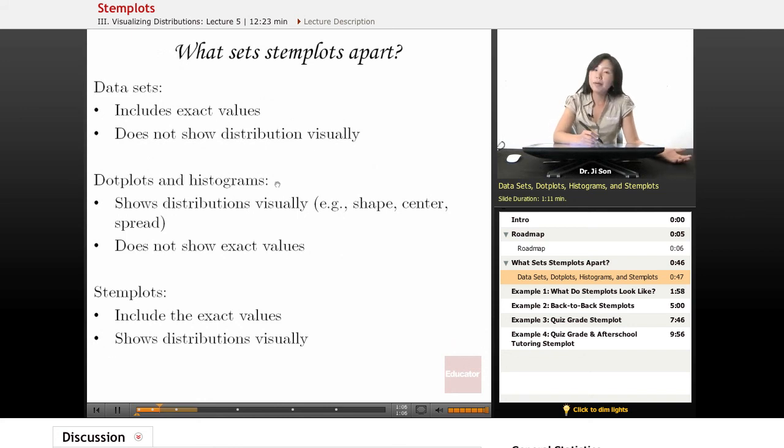The nice thing about dot plots and histograms is that they show you the distribution visually. You can see the shape, the center and the spread, how spread out it is. But unfortunately, they don't always show the exact values. Sometimes dot plots do, but only if you have a very small range.